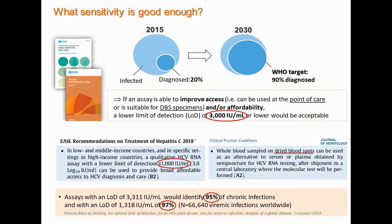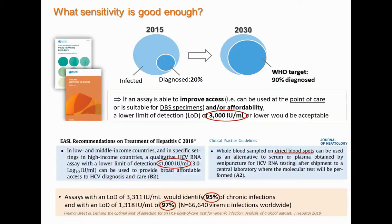There has been concern regarding the sensitivity of these alternative assays, but we need to make a major effort to reach 2030 targets with 90% of people diagnosed. WHO endorses tests that can improve access and/or affordability and can at least detect 3,000 international units per mL. European clinical guidelines recommend 1,000 IU/mL, and these levels of viremia can be detected in 95 to 97% of all chronic infections. Unless we use alternative testing methods, many people worldwide will not have access to conventional hepatitis C diagnosis.